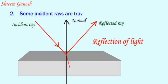Some incident rays travel into new medium. This is the medium with reflecting surface. This event is known as refraction of light.